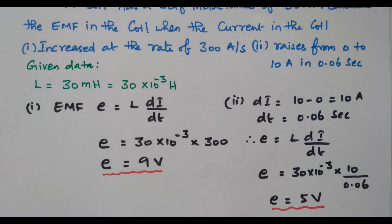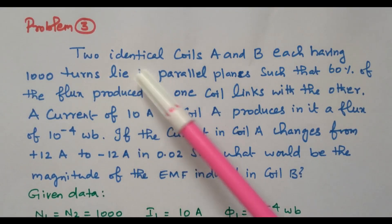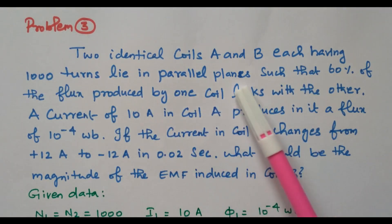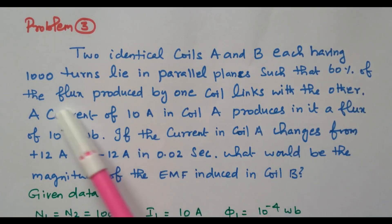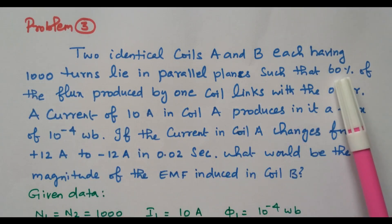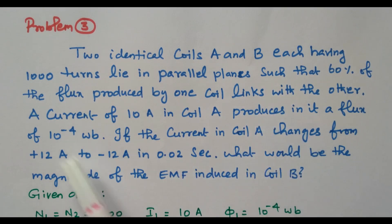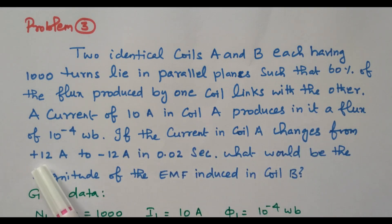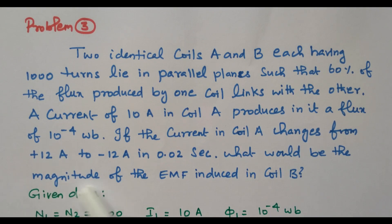Now we will go to the third problem. Two identical coils A and B, each having 1000 turns, lie in parallel planes such that 60% of the flux produced by one coil links with the other. A current of 10 ampere in coil A produces a flux of 10⁻⁴ Weber.